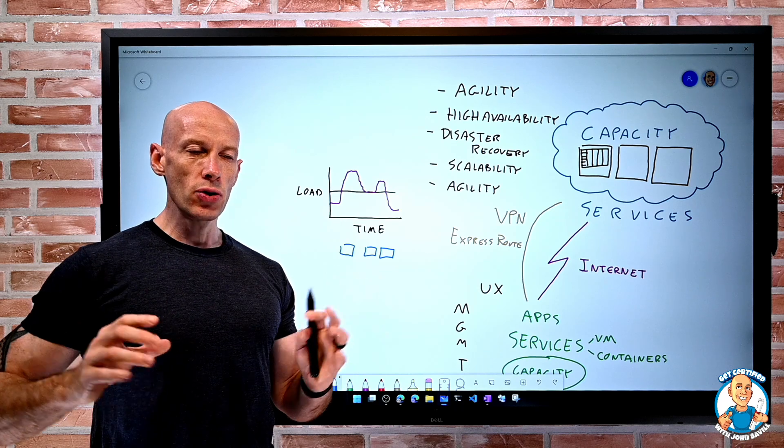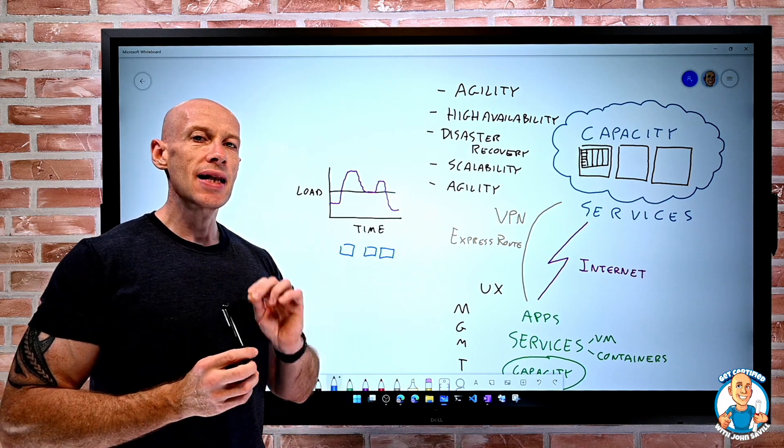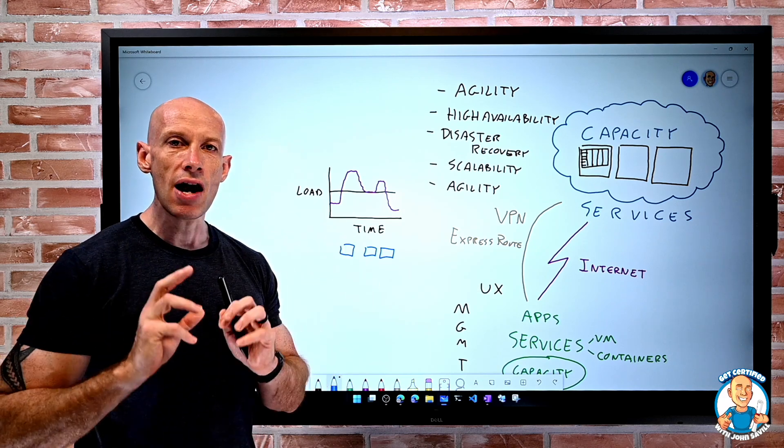So you're going to hear about auto scale, this idea of elasticity, that consumption-based nature is key to everything we're going to do. So these are some key benefits we really get from the cloud.